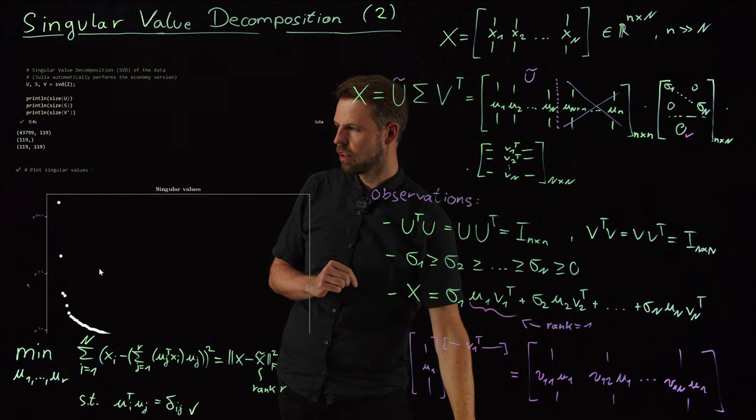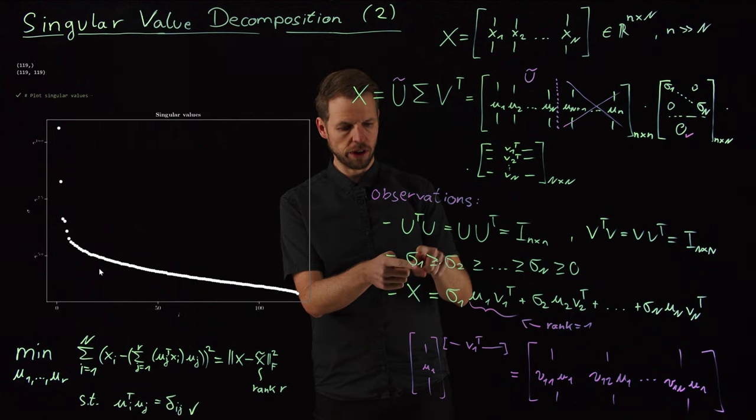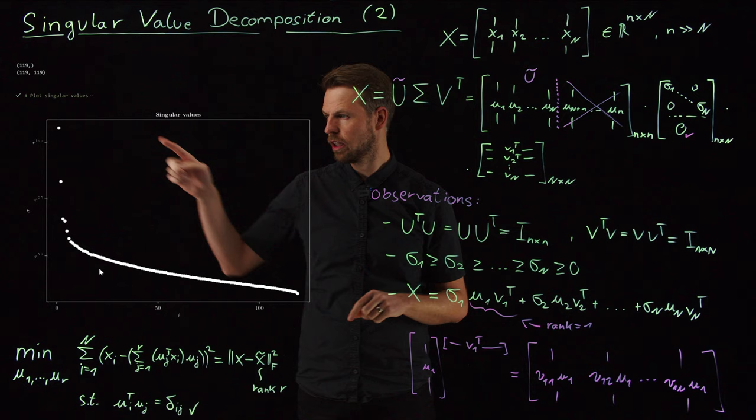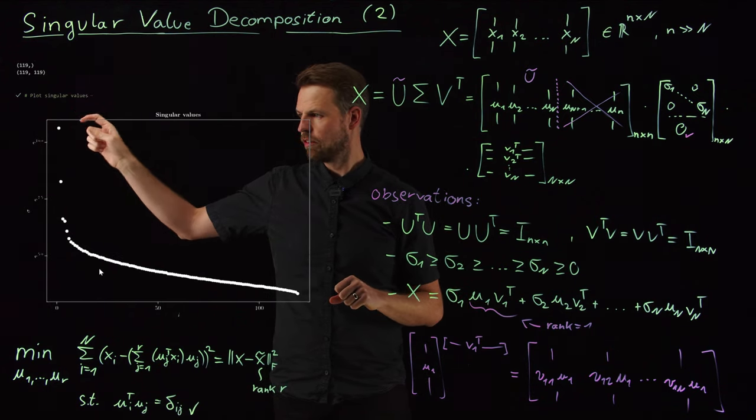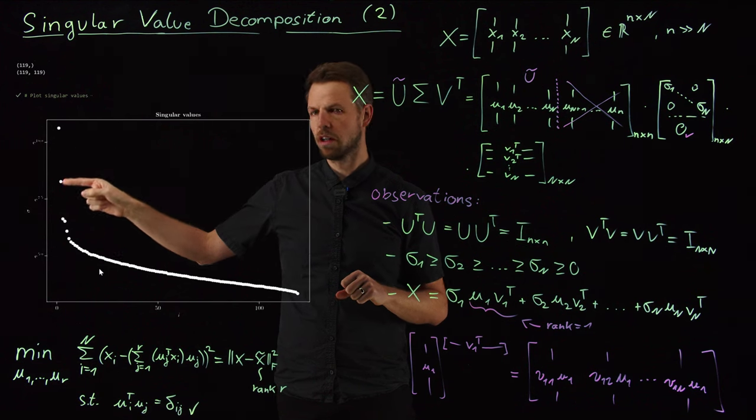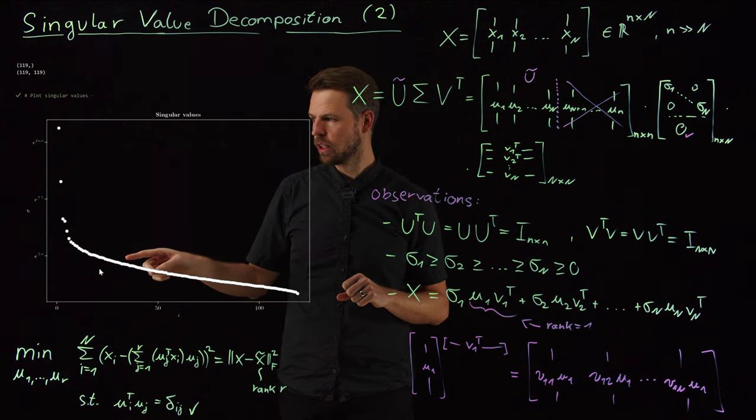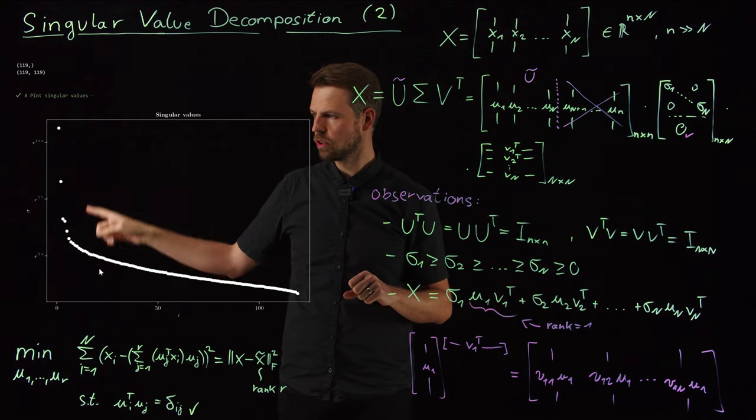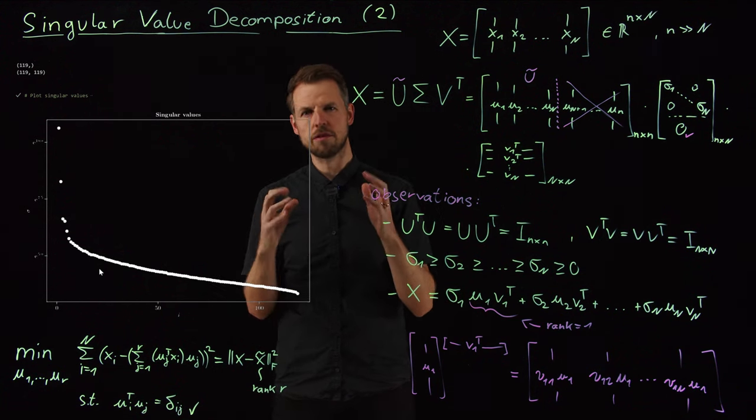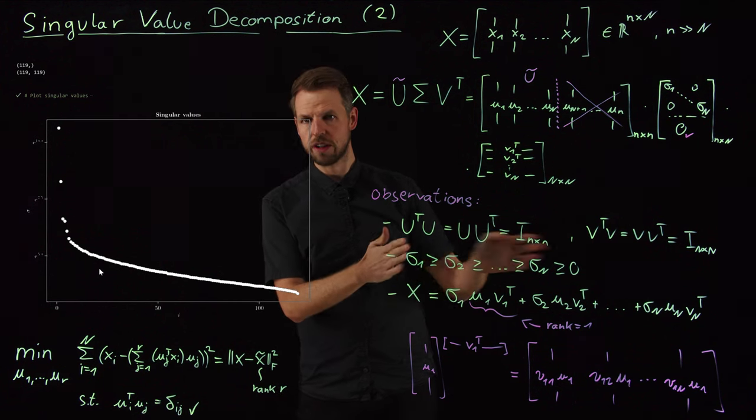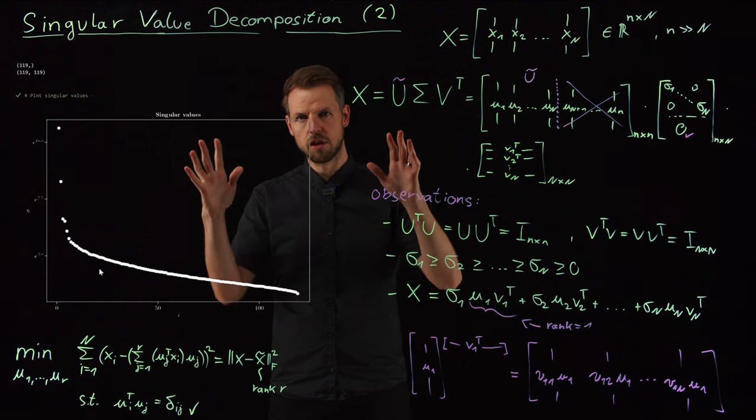And what you can see now is this is the sorting that I introduced here. I said sigma 1 is greater than or equal to sigma 2, and so on. And so you see here really, and take care that this is a logarithmic scale, so you see we have a very, very large importance in the first vector, also a very large importance in the second vector, and then it starts to decay. And you can see, even though these are still high values, if you compare them to one another, these are several orders of magnitude. So the most information is actually contained in the first few vectors.